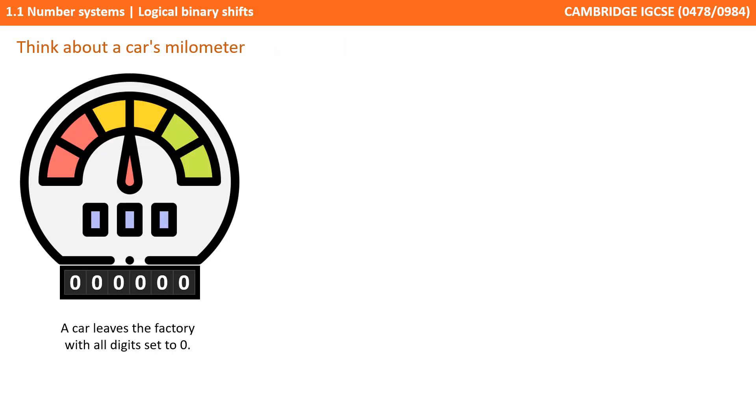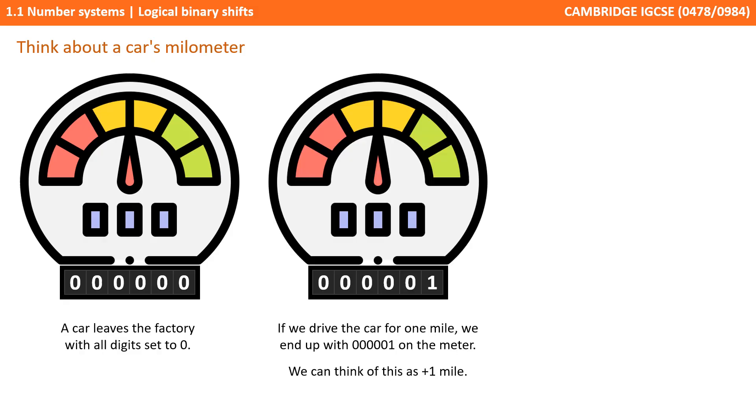Let's just step back and think about a little analogy. Imagine a car's mileometer. The car leaves the factory and all the digits are set to 0, and we can think of this as being the value 0. Drive the car for 1 mile and the mileometer ends up at 000001, and we could think of this as representing positive 1 mile.